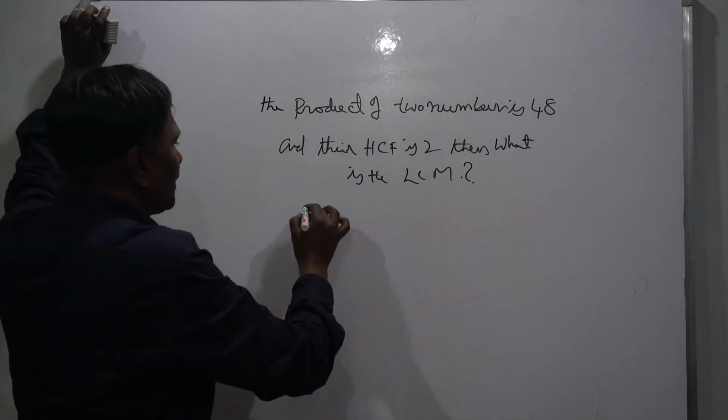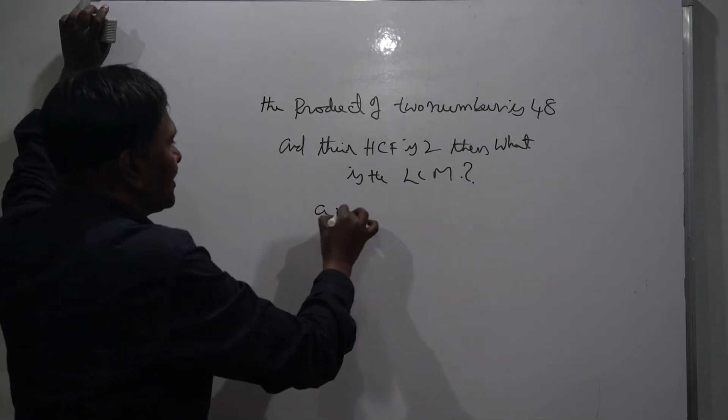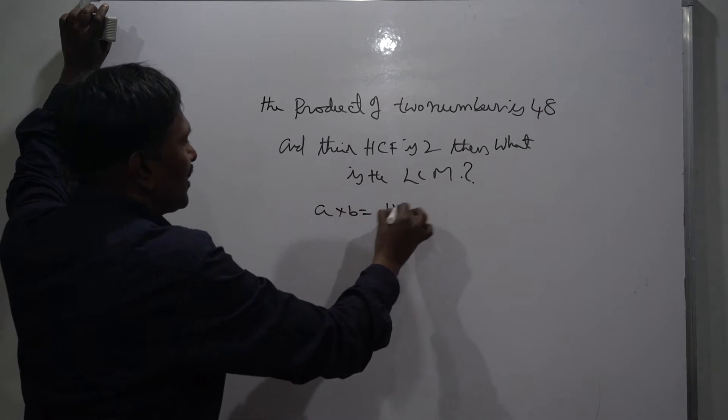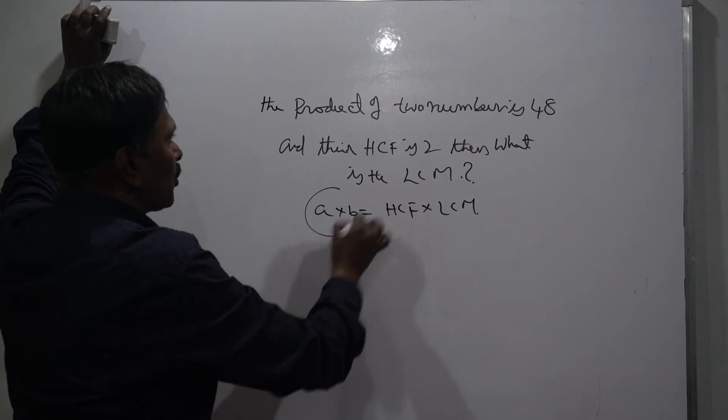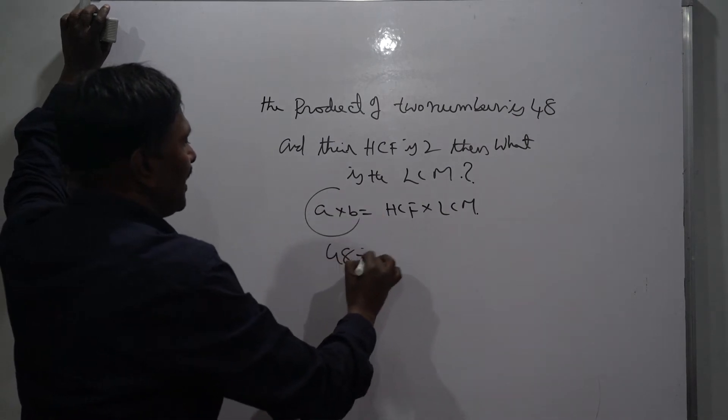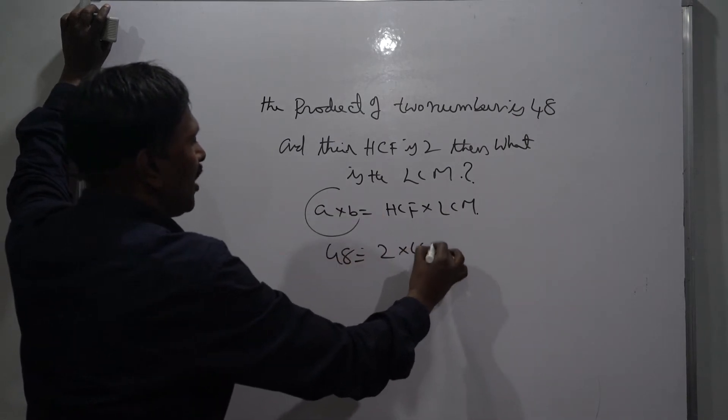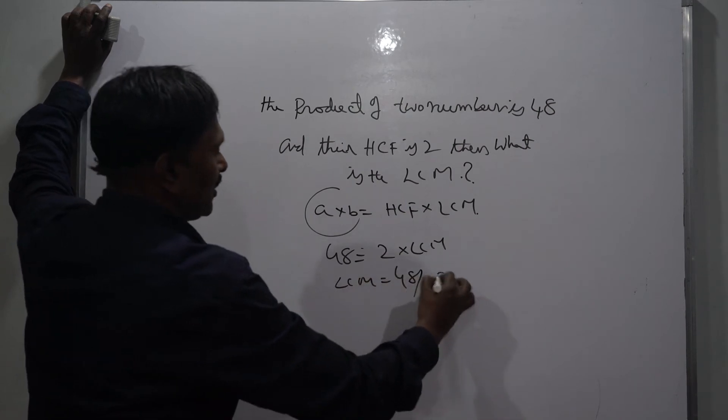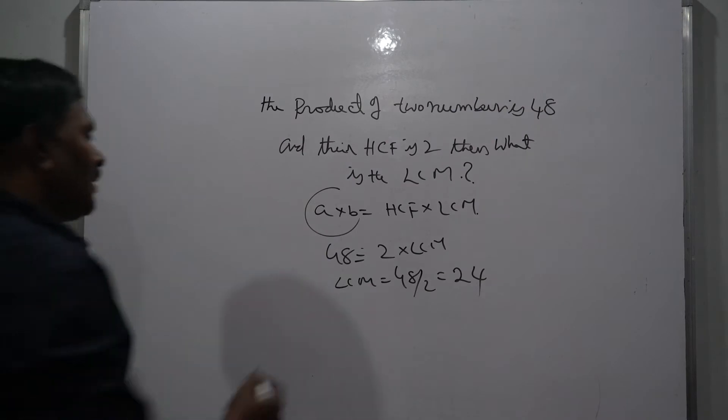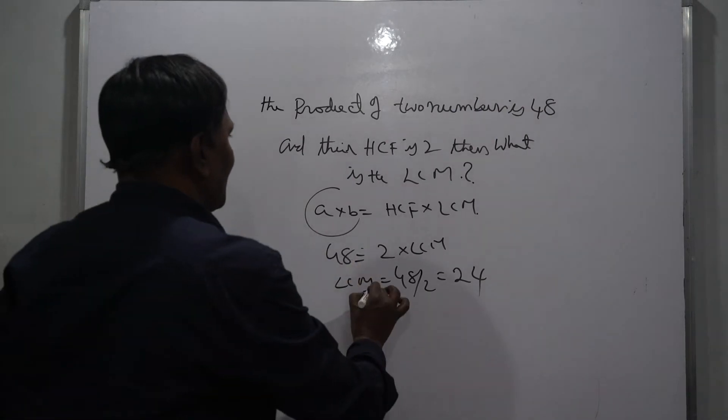Here we know that the product of two numbers is equal to the product of HCF into LCM. So we know the product of two numbers is 48, HCF is 2, and LCM we have to find. So LCM is equal to 48 by 2, this is 24.